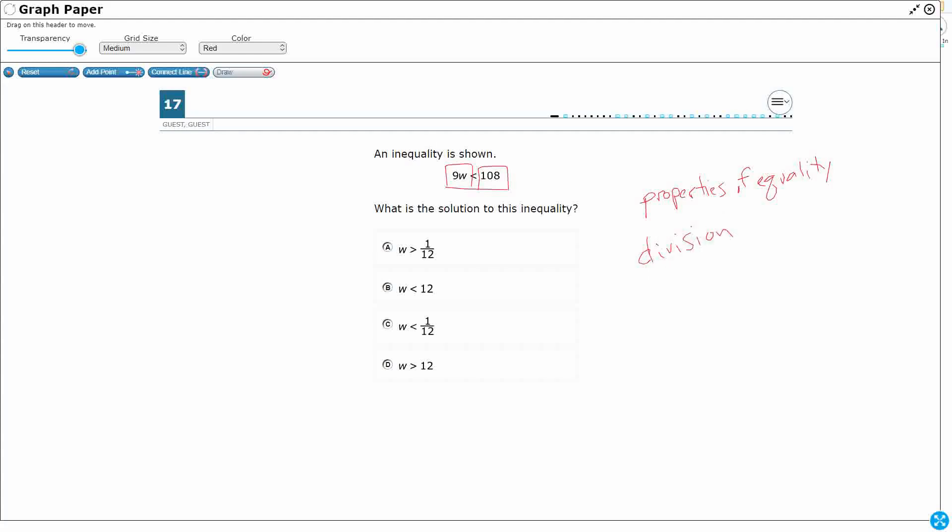So what that says is, here's a basic expression, right? So if x equals y, what the division property of equality says, you can divide both sides by the same thing, and you can still have a basic equation that equals itself, okay?